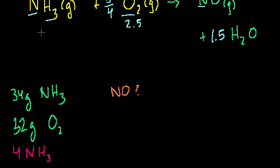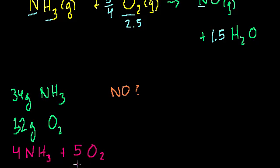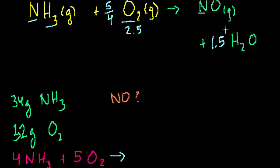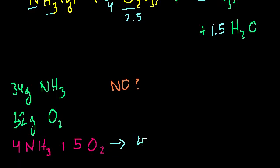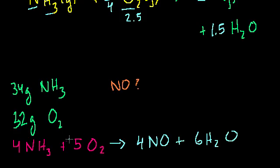Or we could think of it in terms of moles — 4 moles of ammonia, or 4 × 6 × 10²³ molecules of ammonia. Hopefully you're starting to see the value of moles. Plus 5 molecules of molecular oxygen. Multiplying everything by 4 yields 4 NO, plus 6 H2O. There we go — good practice balancing equations.